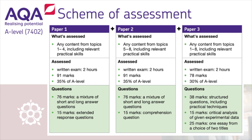Unique to the AQA A-Level Biology syllabus, this paper includes a 25-mark synoptic essay. Students are required to write between two to four pages on average on a theme in Biology — for example, on the importance of movement within and between cells. To succeed, students must demonstrate their understanding of this theme in multiple different contexts covered throughout the syllabus. The examiners are specifically looking for the level of detail and accuracy expected following two years of study.